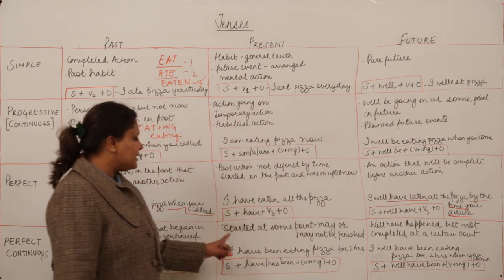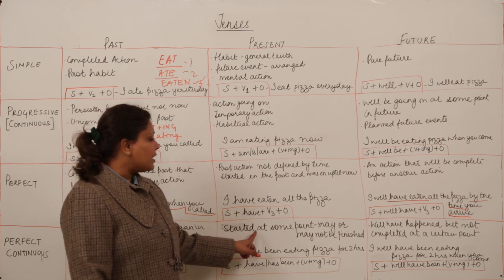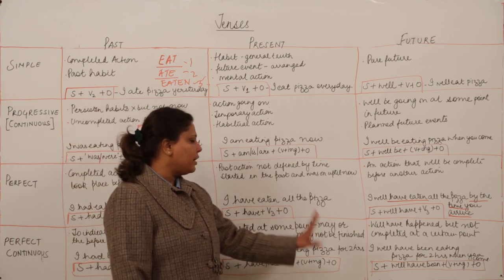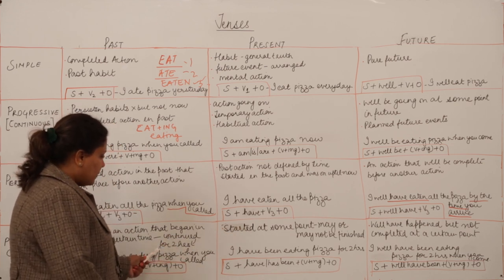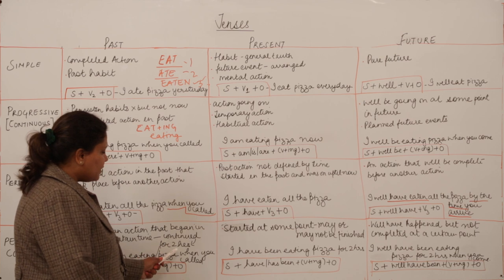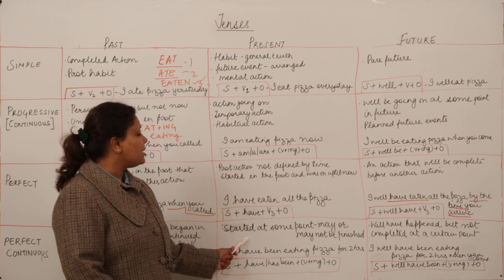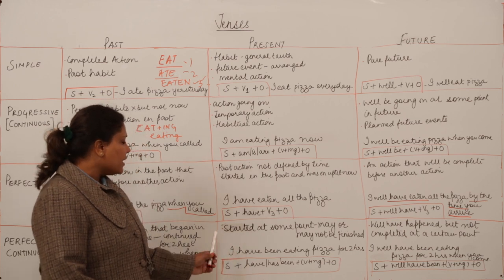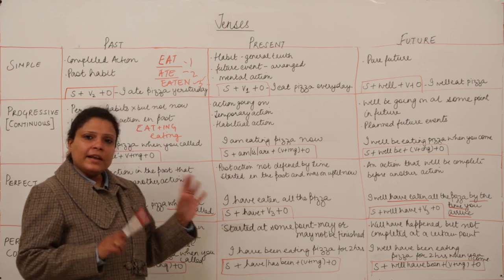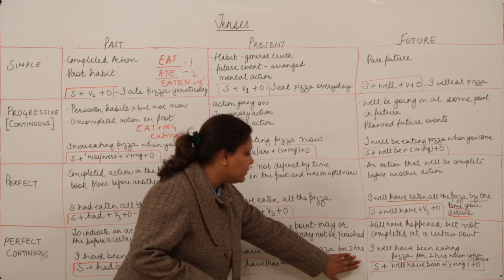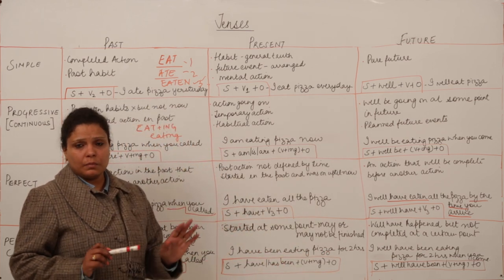The present perfect continuous tense is used when we have to express an action that started at some point and may or may not be finished — we are not bothered about the time. When the time is of significance, we use the past perfect continuous; when the time is not of significance, we use the present perfect continuous. Like: 'I have been eating pizza for two hours.' When it started doesn't matter — for two hours he had been eating pizza, and it may or may not be finished.